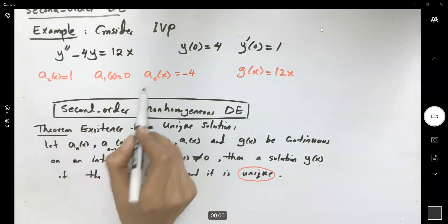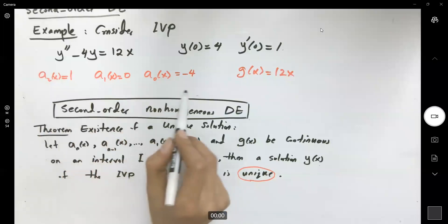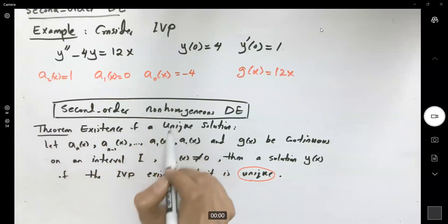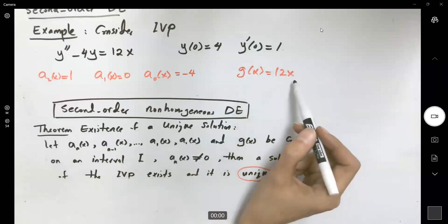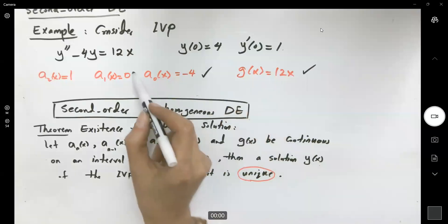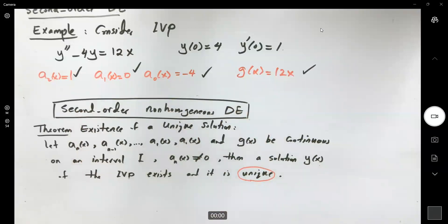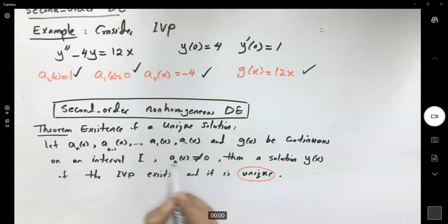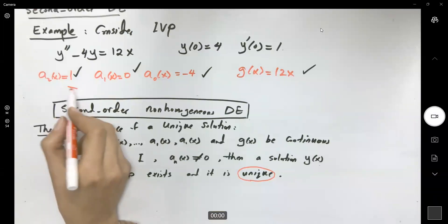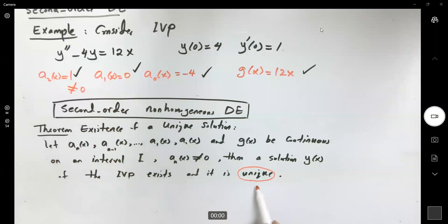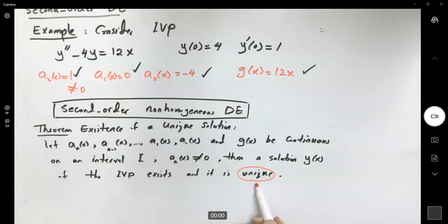We found all of these coefficients — they are all constants and therefore all continuous. The function g(x) = 12x is also continuous. The leading coefficient is 1 and is never zero, so the conditions are met. The theorem assures us that we can find a solution and that solution is unique.